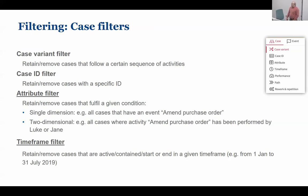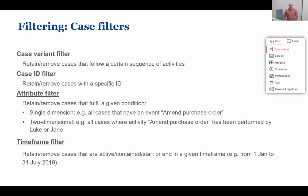There are two filters that are not very frequently used: the case variant filter and the case ID filter. It's good to know they exist, but you will rarely use them. However, there is one type of filter that is very commonly used: the attribute filter. The attribute filter retains those cases — those executions of the process — where a given activity occurs.